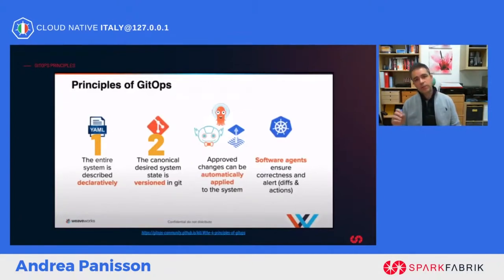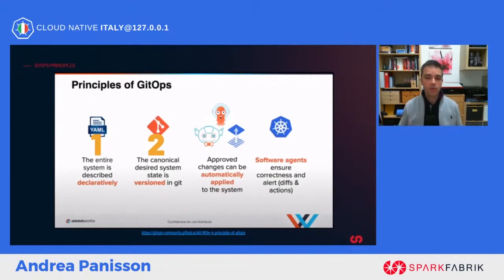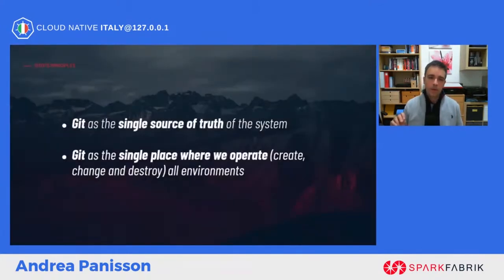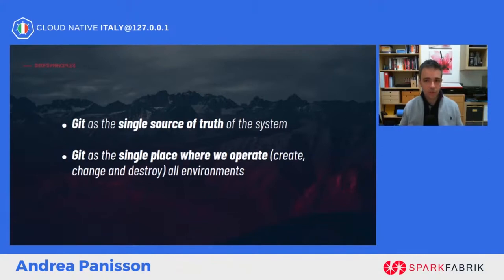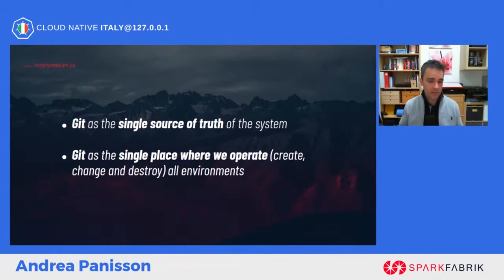The second principle is a direct consequence of the first. Having described declaratively — inside one or more files — what configuration I want for my application, I can version these files in a Git repository. GitOps tells us that the desired state of our system must be versioned in a Git repository. If a Git repository contains files that describe declaratively the desired state of our system, we can say that Git becomes the single source of truth for the state of our system — the single place where we create, change, and destroy all environments. This is the developer-centered experience concept.